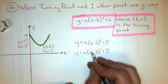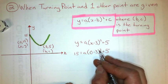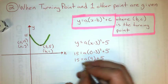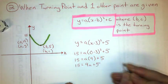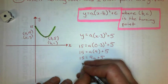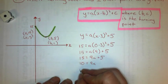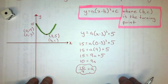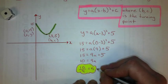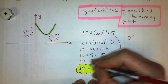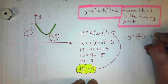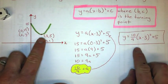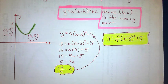So y is 15, x is 0. Watch out: any time you square something in these problems, it turns out positive. So negative 3 squared is 9, not negative 9. That becomes a coefficient: 15 equals 9a plus 5. Subtracting 5 gives 10 equals 9a, so a equals ten ninths — I'll leave that as an improper fraction rather than a decimal. Substituting back, the equation is y equals ten ninths times x minus 3, squared, plus 5.